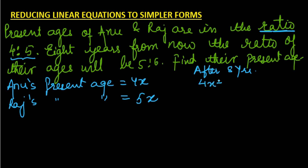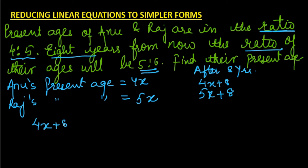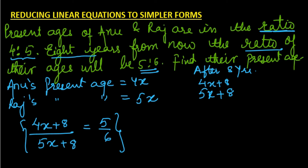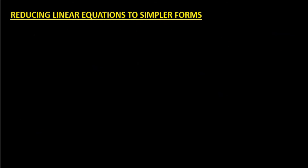Eight years from now the ratio of their ages will be 5:6, which means Anu's age after 8 years divided by Raj's age after 8 years equals 5/6. This gives (4x + 8)/(5x + 8) = 5/6. This is not one of the basic forms, so we will reduce it and then solve.